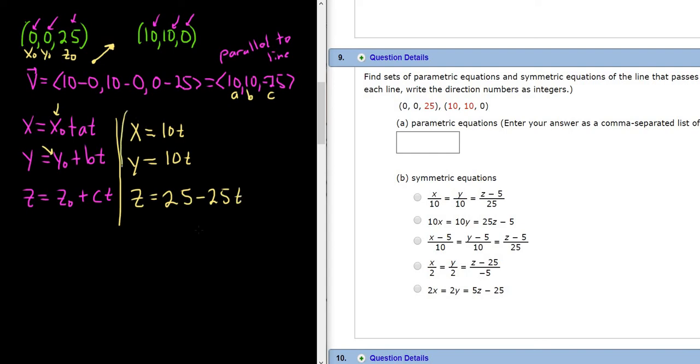So these would be the parametric equations of our lines. So as time passes, you could think of t as time. This would give you the x, y, z coordinate of the line. So like if you were walking along a line in the space, this would tell you where you are on the line as time passes.